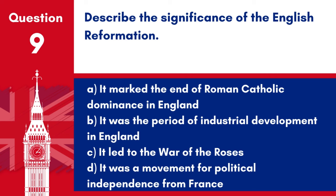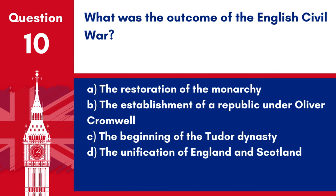Question 9. Describe the significance of the English Reformation. A. It marked the end of Roman Catholic dominance in England. B. It was the period of industrial development in England. C. It led to the War of the Roses. D. It was a movement for political independence from France. Answer: A. It marked the end of Roman Catholic dominance in England. The English Reformation is significant as it marked the end of Roman Catholic dominance and the establishment of the Church of England.